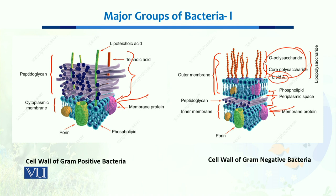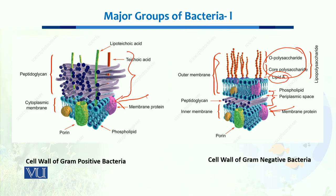This additional outer membrane of lipopolysaccharide helps gram negative bacteria evade staining. They are a totally different group with marked differences in characteristics compared to gram positive bacteria. This gram staining classification is the first and most basic test performed for bacteria in the laboratory.